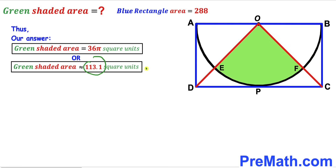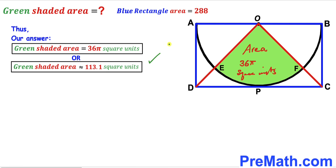The area of the green shaded region is 36π square units, which is approximately equal to 113.1 square units. That's our final answer. Thanks for watching, and please don't forget to subscribe to the channel for more exciting videos. Bye!